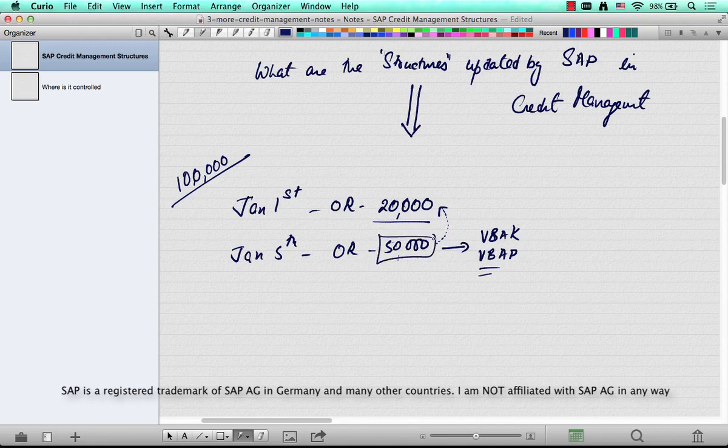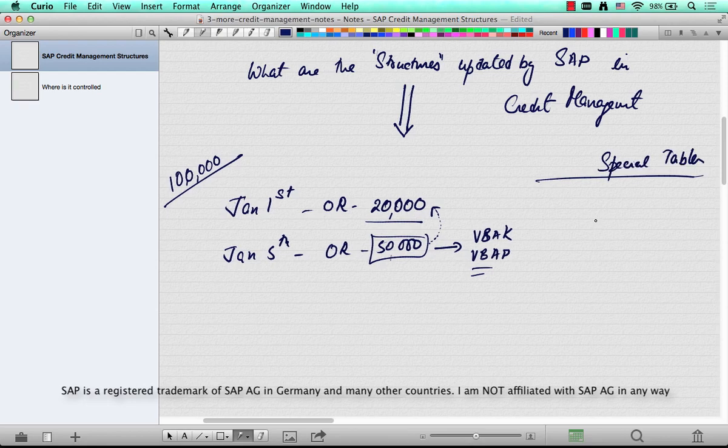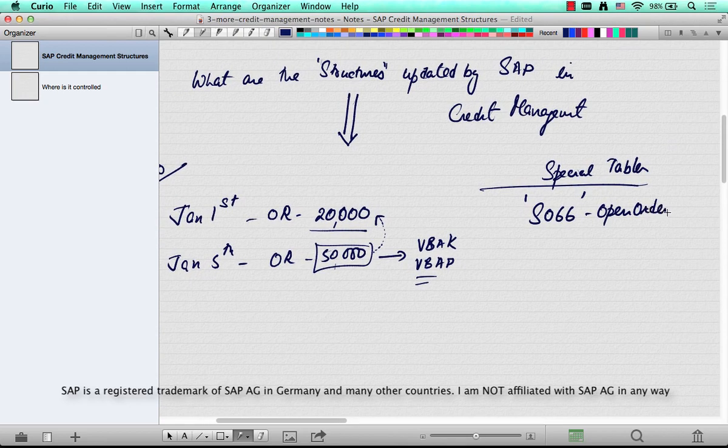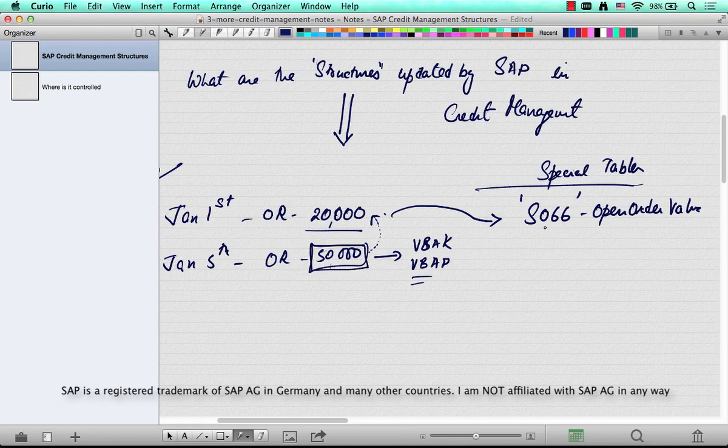So what does SAP do? SAP stores this data in a special set of tables called S066. That's the name of the table, and that table is the open order value. So as soon as an order is created, if it's configured properly, it'll go to this table and make an entry here. So by the time the second order is created, SAP can refer to this table and see that there's been an order that has already been placed for a value of 20k.